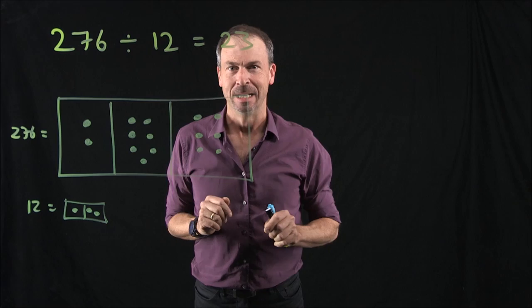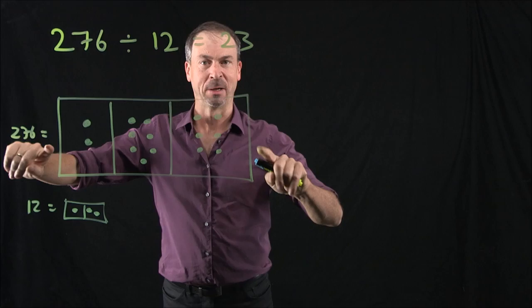Okay, the division problems I've been doing so far have all worked out very nicely. So for example, we did 276 divided by 12 is 23. We saw that as follows.